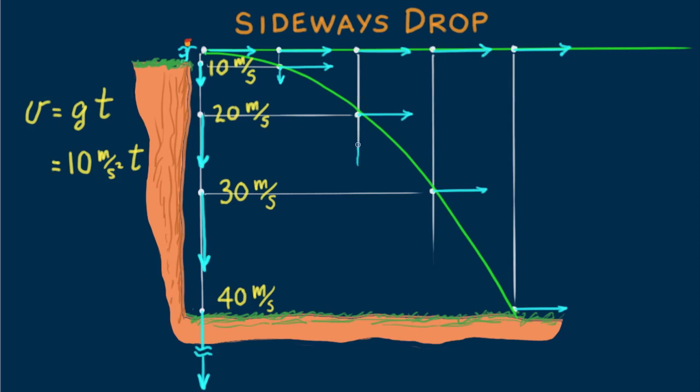We draw twenty meter per second vectors at each position. Next, we draw the vertical components. Again, not enough space for the forty meter per second component. Then we construct parallelograms for each position. And with the parallelogram rule, we construct the resultant velocities at each position. Again, our lower vector runs off the page. But you get the idea, right?